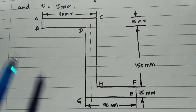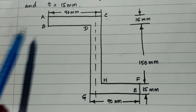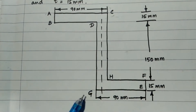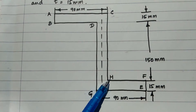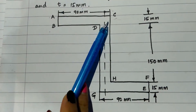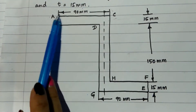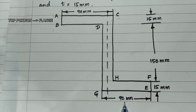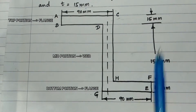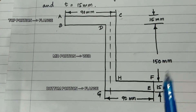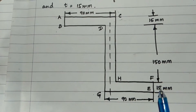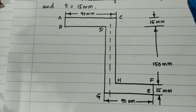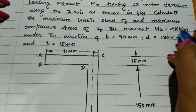See the figure — they have given eight points: A, B, C, D, E, F, G, H. The top flange is 90 mm, the bottom flange is 90 mm, the web height is 150 mm, and each thickness is 15 mm.